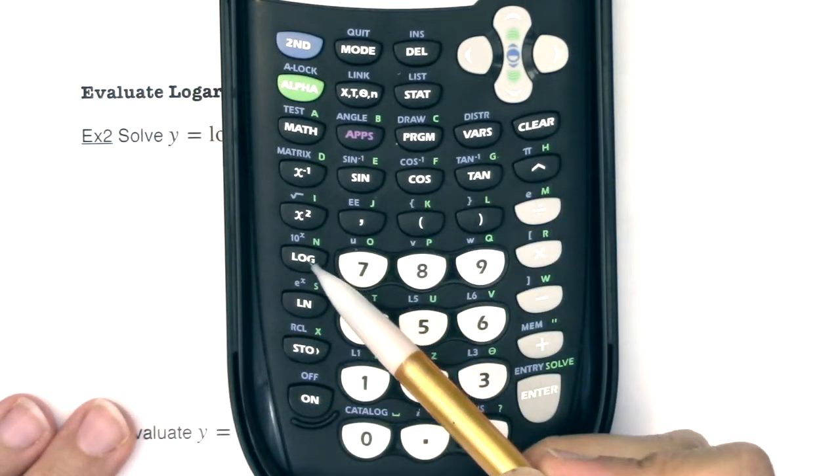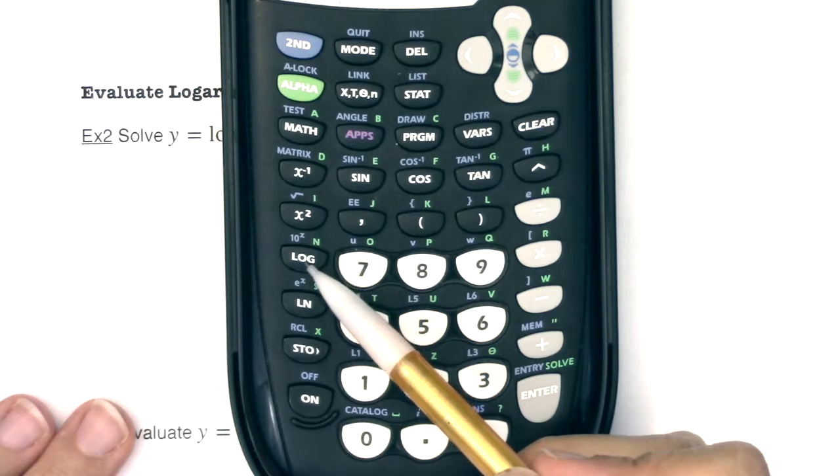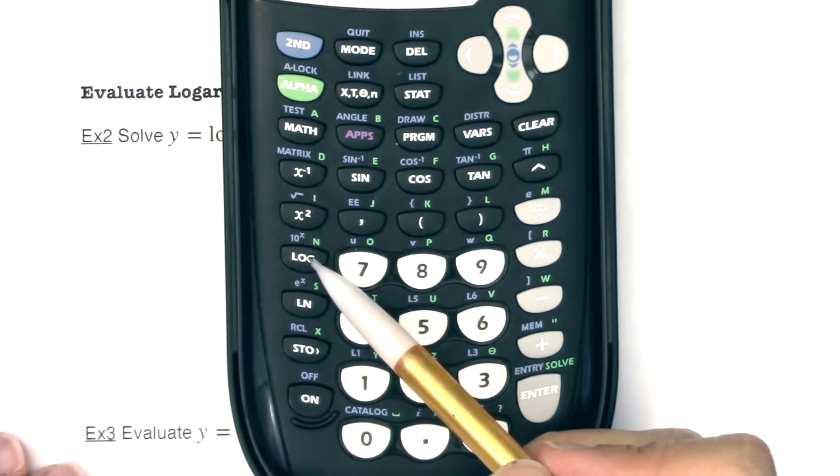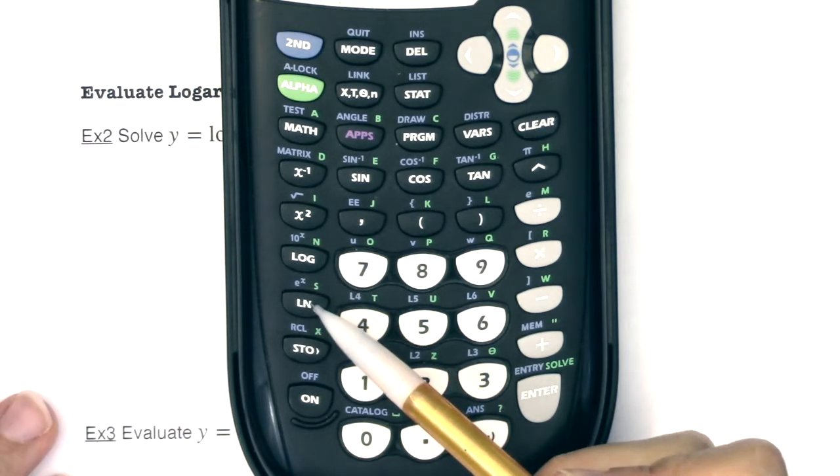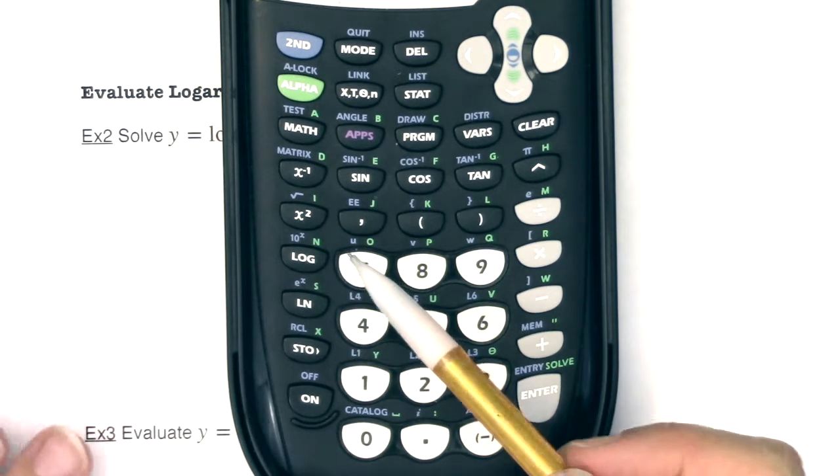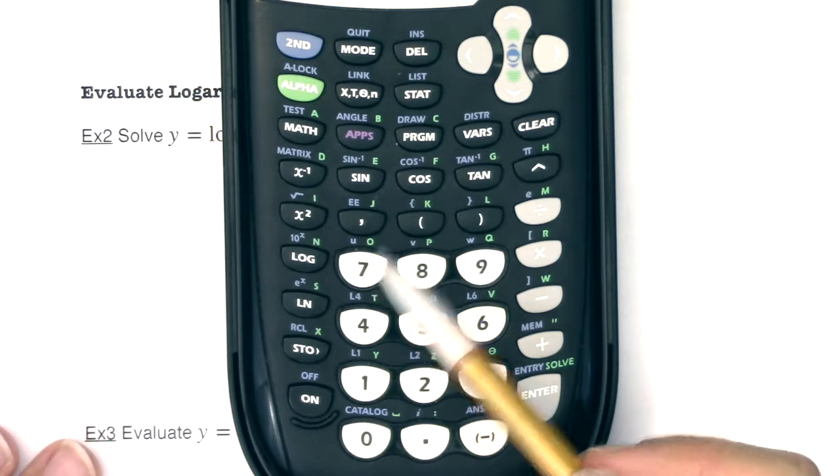The closest I get is to this LOG button, and I'll talk about that closer to example four. I have a LOG button, that's a button without any base, and I'll tell you what that defaults to, and then I have an LN button. I'll also talk about what that represents, but I don't have a LOG base 121 button.